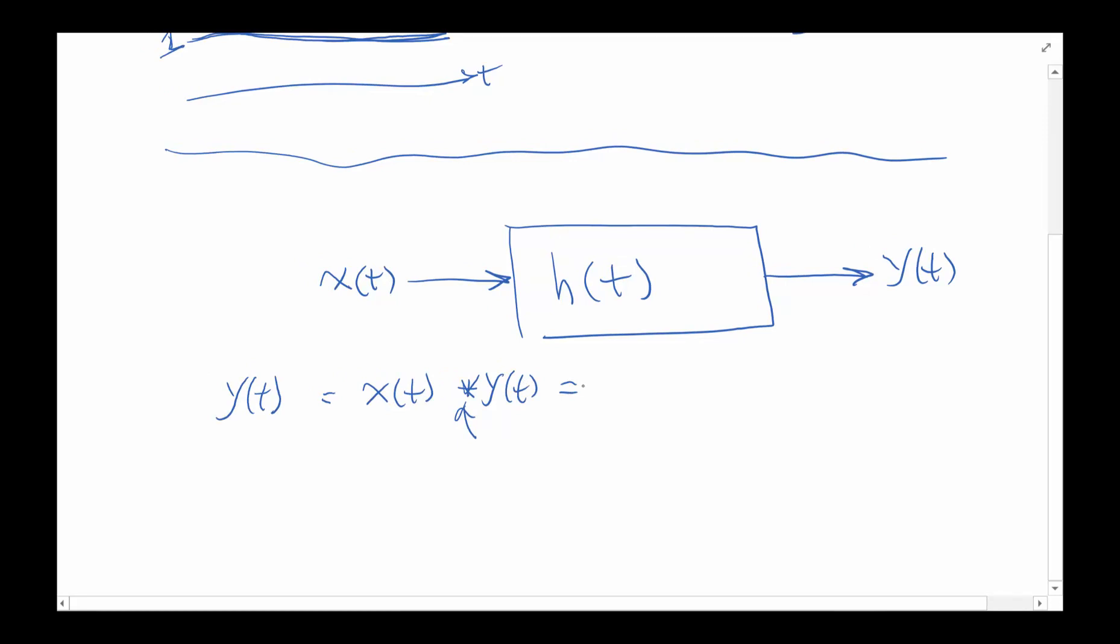Instead of the discrete time sum, in this case it's going to be an integral from minus infinity to infinity. We have to change the variable to tau because the integration is with respect to tau, and tau is the variable while t is the constant. So it's H(t) - I wrote Y(t) but I should write H(t) here.